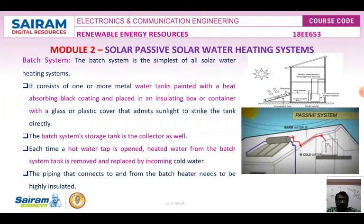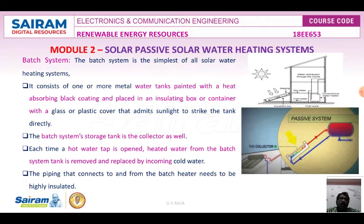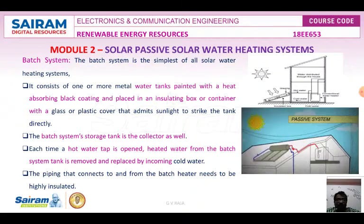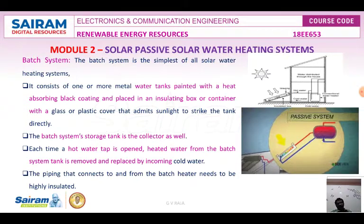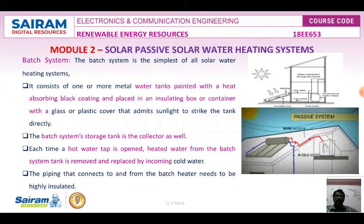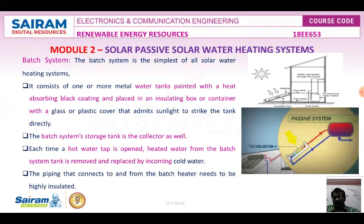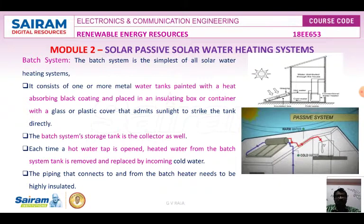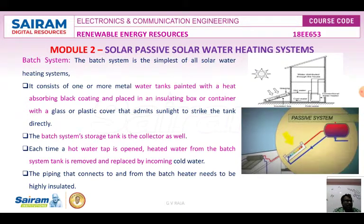The active system employs pumps and controllers to regulate and circulate the water through the collector and the storage tank. The active system is very efficient compared to the passive system. Since the passive system is less efficient, the passive approach is simpler and more economical, because in an active system a greater number of additional accessories are used, increasing the cost.